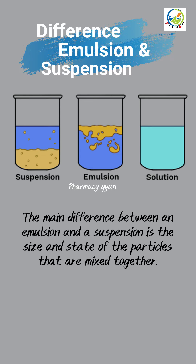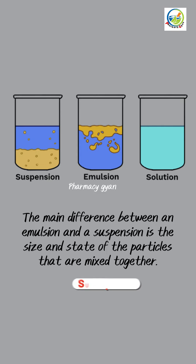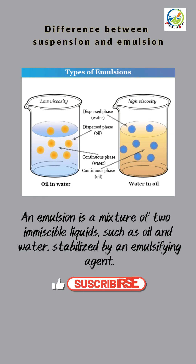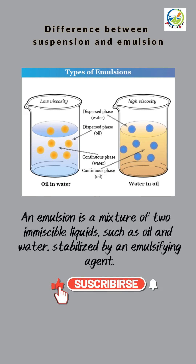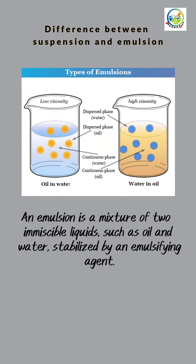The main difference between an emulsion and a suspension is the size and state of the particles that are mixed together. An emulsion is a mixture of two immiscible liquids, such as oil and water, stabilized by an emulsifying agent.